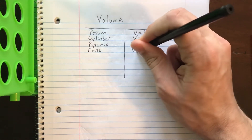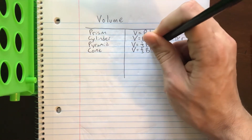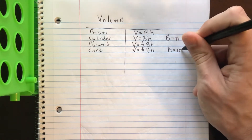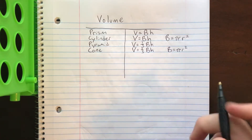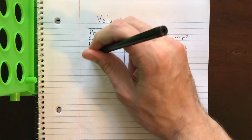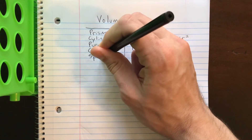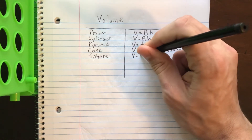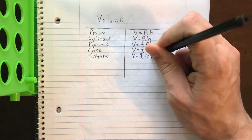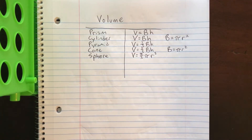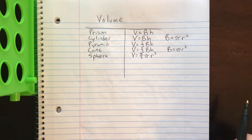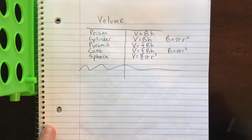If it's a triangle you do one-half base times height; if it's a rectangle you just do base times side. Next we have a cone — a cone is also one-third big B times H, but for that one just remember that big B is pi r squared again since the base of the cone is a circle. And then lastly we have the sphere. The sphere's formula is four-thirds pi r cubed — make sure that you cube, not square.